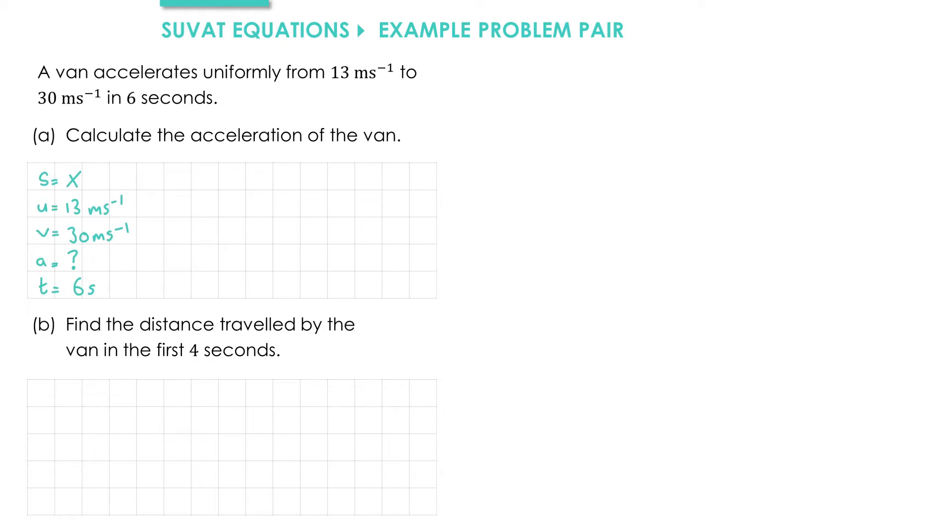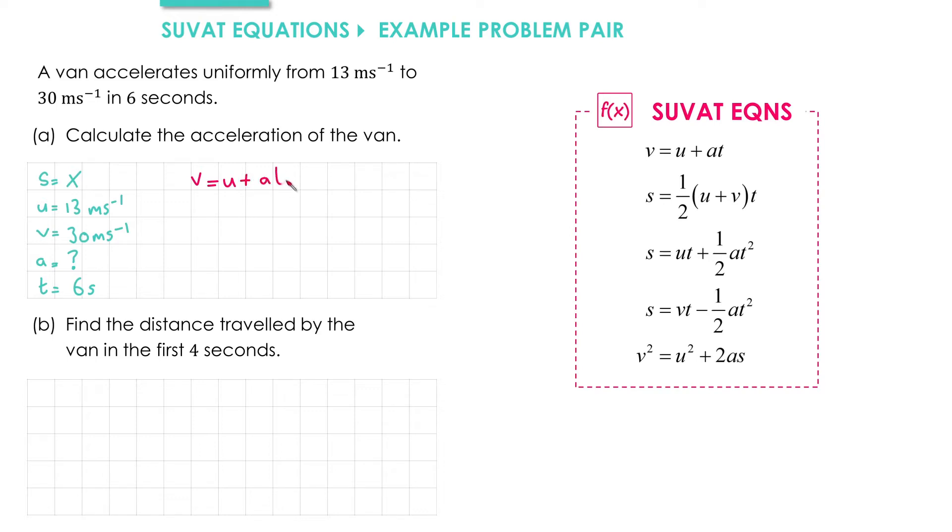Next, we have to consider which is the most appropriate SUVAT equation. Here are our SUVAT equations. We're going to look through each of these, looking for one that has U, V, T, and the quantity we're trying to find, which is A. The one we're looking for is V equals U plus AT.